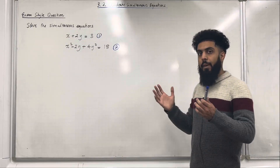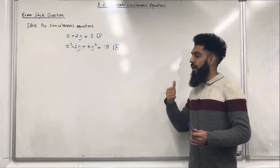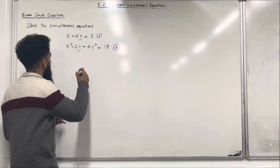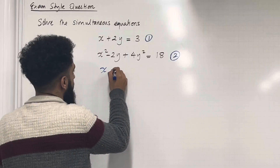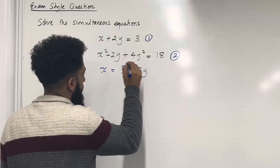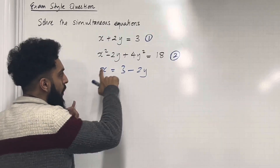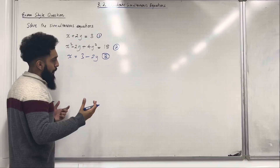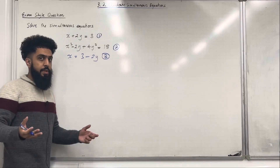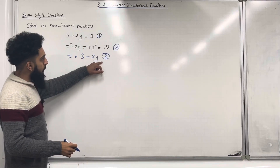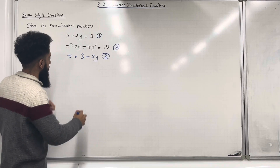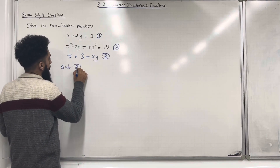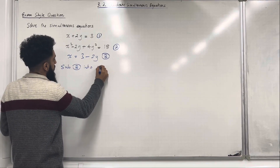Now I'm going to make x the subject in equation 1. If I make x the subject I get x equals 3 minus 2y. I can call this equation number 3. So now what we do is substitute equation 3 into equation 2.